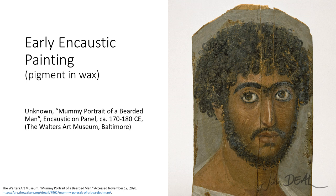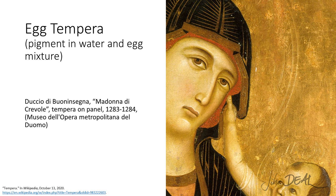Pigment mixed into beeswax was used by early Egyptians to make encaustic paint. Due to its viscosity when heated and hardness when cooled, its excellent adhesion and its preservative properties, it became a favored medium. Portraits of the dead, commonly referred to as mummy paintings, would adorn the sarcophagi of prominent revered figures or well-loved relatives.